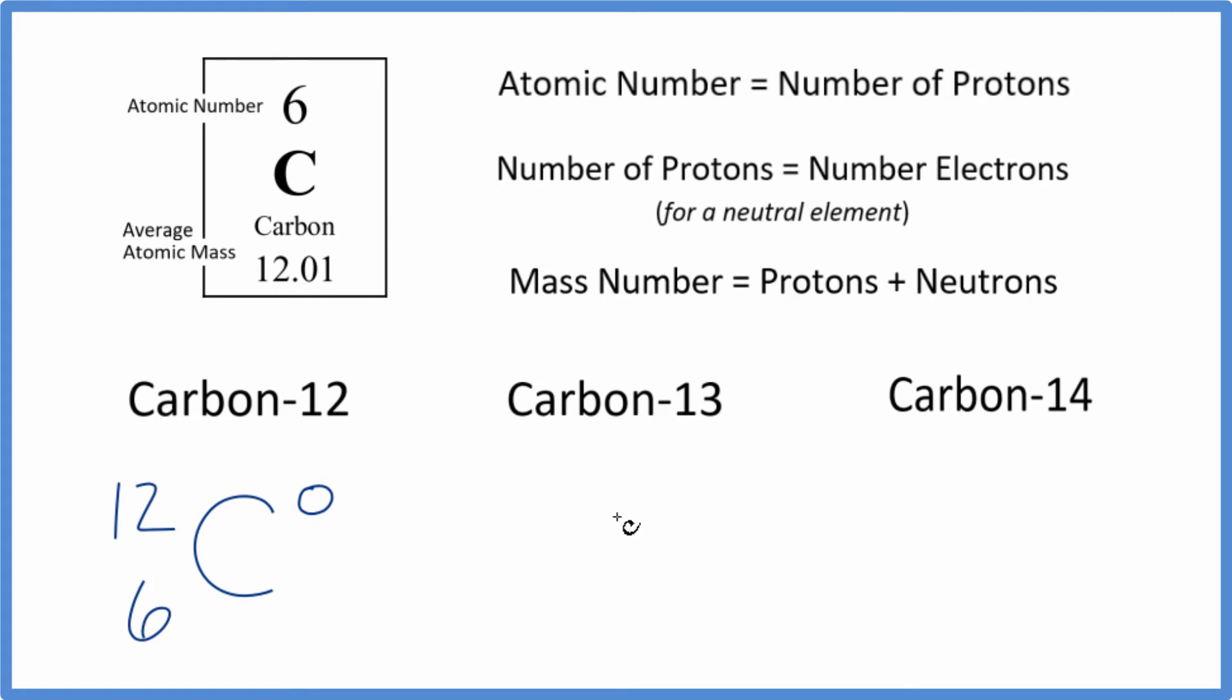For carbon 13, we have carbon. Mass number is 13. And the atomic number, it stays the same because this is carbon. So we have 6 for our atomic number. Again, we could put a zero since it is a neutral atom.